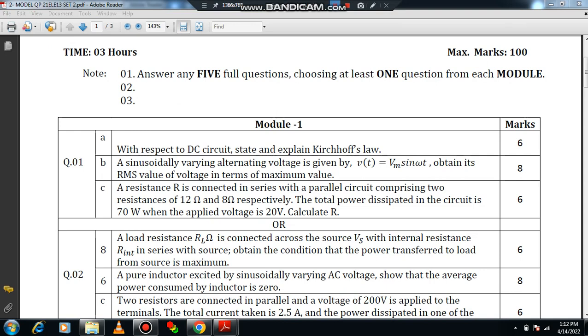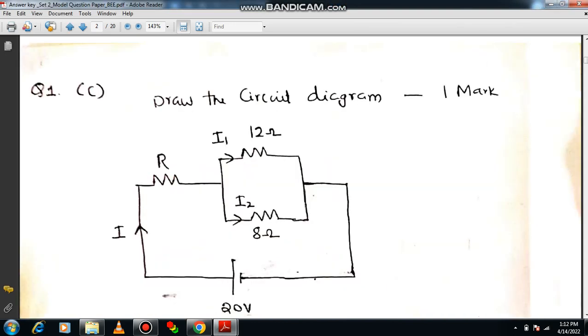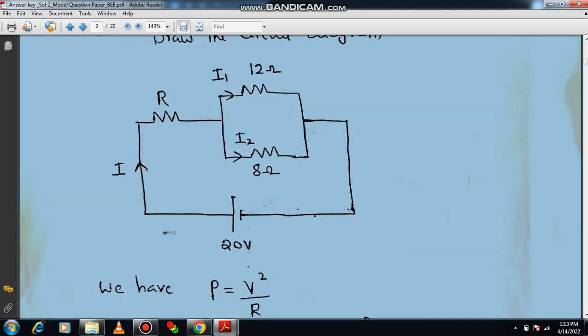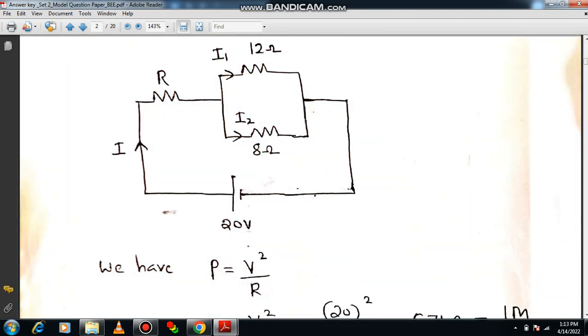I will show you how to make out this. Please read the question once more. As we were discussing, the diagram is a must. So a resistor R is in series with a parallel combination of 12 ohm and 8 ohm respectively. 20 volt has been applied. Definitely there is a flow of current if I apply 20 volt. At this point the current is getting divided into I1 and I2 because it is a parallel branch.